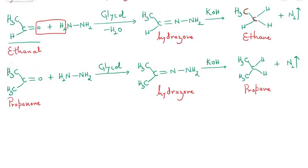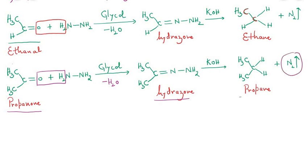In the second example, propanone (a ketone) is treated with hydrazine, losing a water molecule in the presence of glycol, to give acetone hydrazone. This hydrazone, when treated with KOH, undergoes elimination of nitrogen gas to form the hydrocarbon propane.